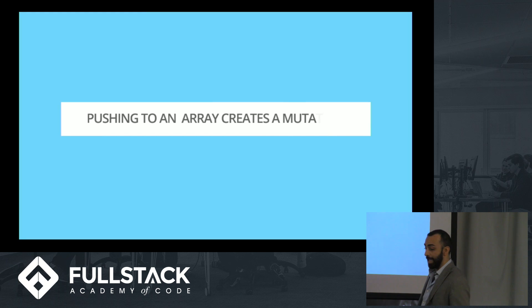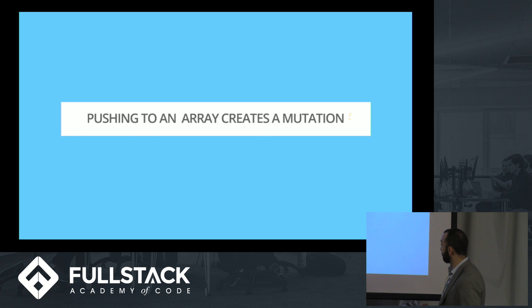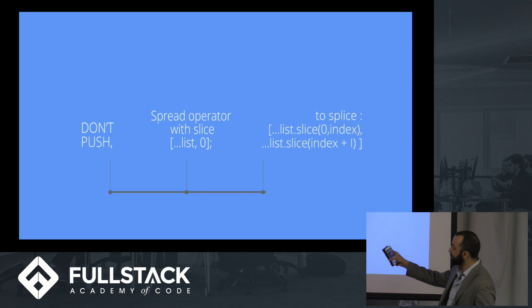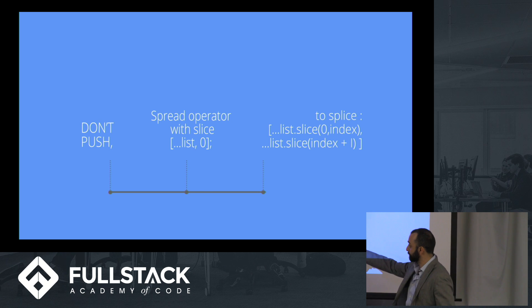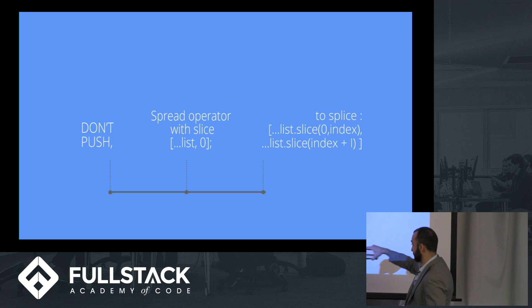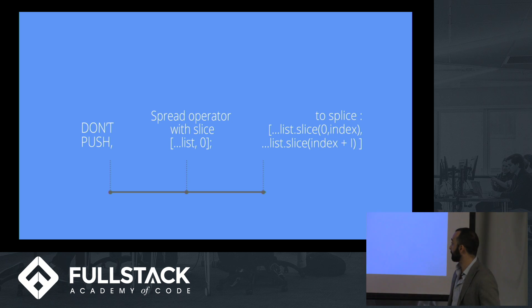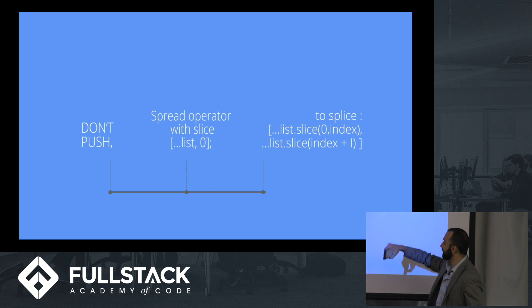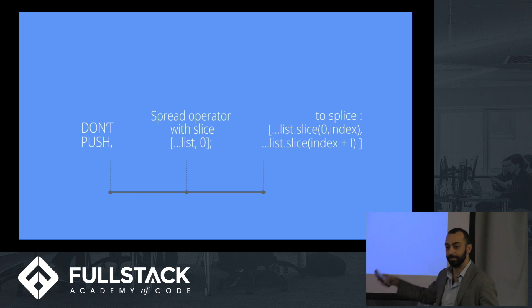A couple more points about thinking functionally. Pushing to an array creates a mutation — and we don't want mutations. So the best way to handle new parts of state is don't push to an array. Use a spread operator with slice. You can see we're adding the array and then putting in the new element we want. And instead of splicing, we use slice, which returns a new copy of your array — going up to the index, leaving out the element we didn't want, then adding the rest in.